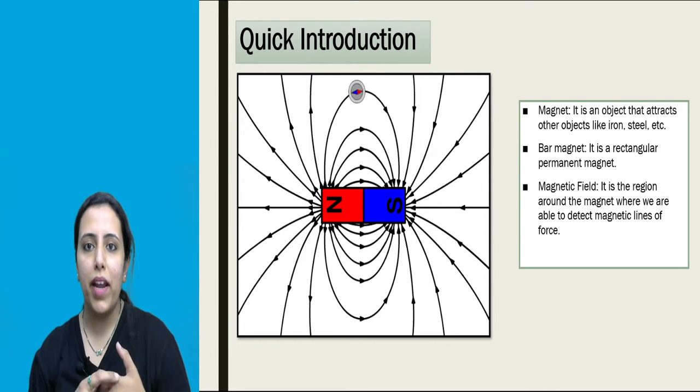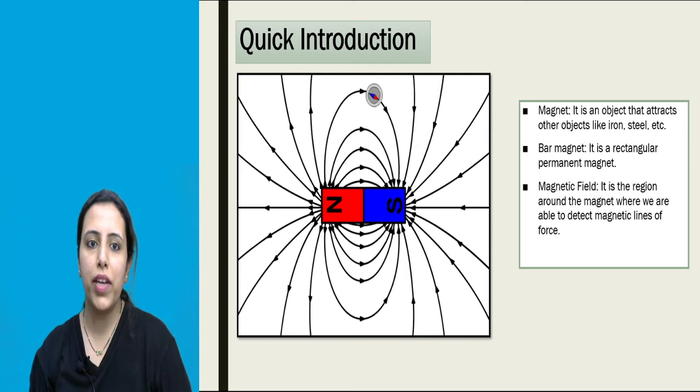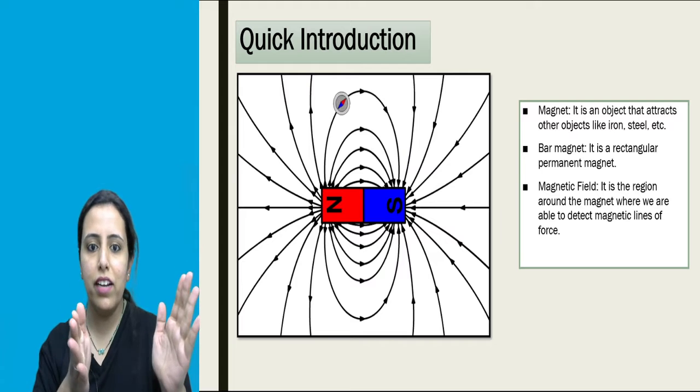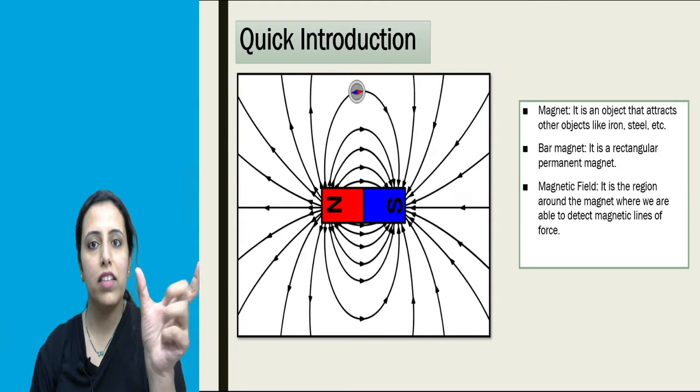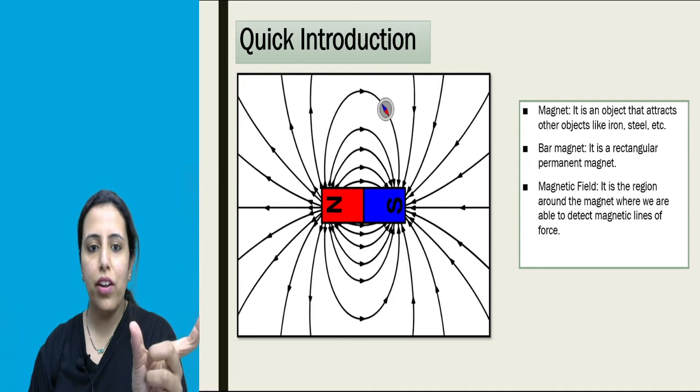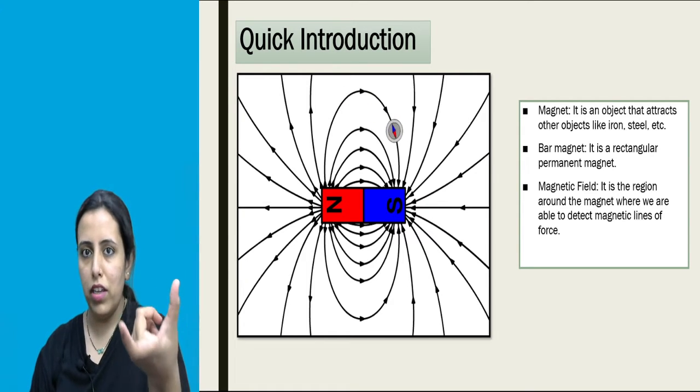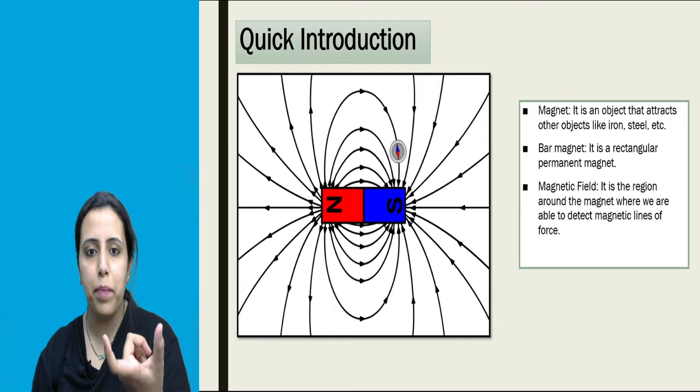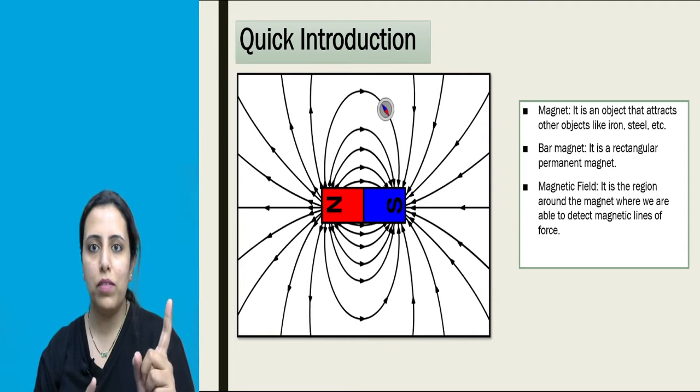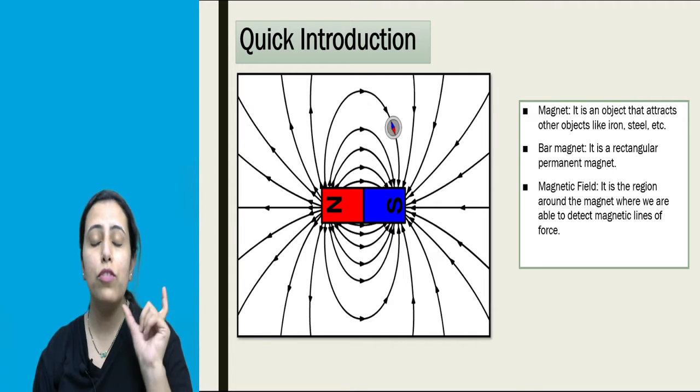What is bar magnet? In the following picture, you can see the bar magnet naming N at one side and S at another side. That is nothing but a bar magnet. It is a rectangular shape and it is a permanent magnet. The poles are fixed - one is North Pole and one is South Pole.